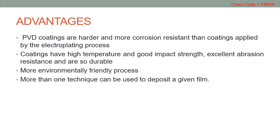The advantages of the PVD process: PVD coatings are harder and more corrosion resistant than coatings applied by the electroplating process. Materials coated by PVD have high temperature resistance and good impact strength, excellent abrasion resistance, and are very durable. This means that materials can be deposited with improved properties compared to the original substrate material properties. The process is more environmentally friendly than electroplating. There are more than one technique utilizing a PVD concept that can be used to deposit a given film, and almost any type of inorganic material can be used, as well as some kinds of organic materials.